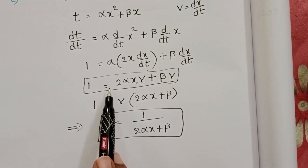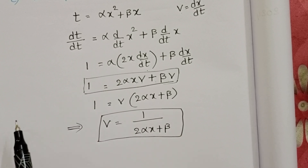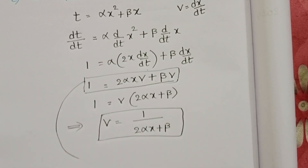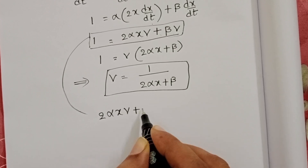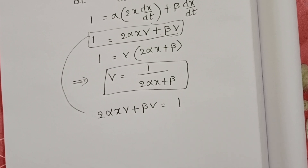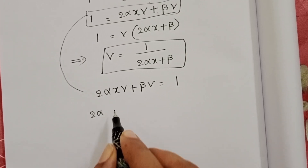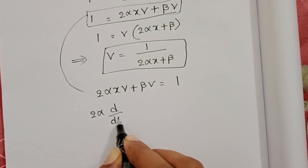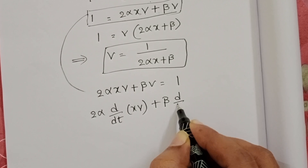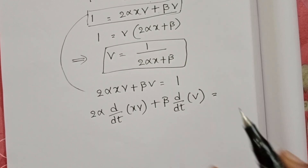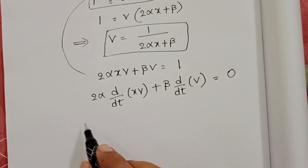Again, differentiate this equation with respect to time on both sides — because we need to get the acceleration. Taking the equation 2αx + β = 1/v, when we differentiate both sides with respect to time, we get 2α·(d/dt of x) + β·(d/dt of x).